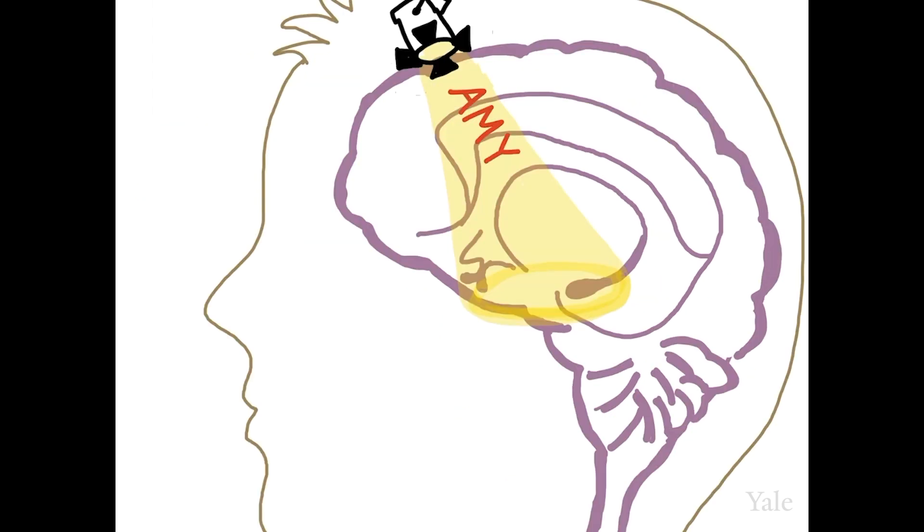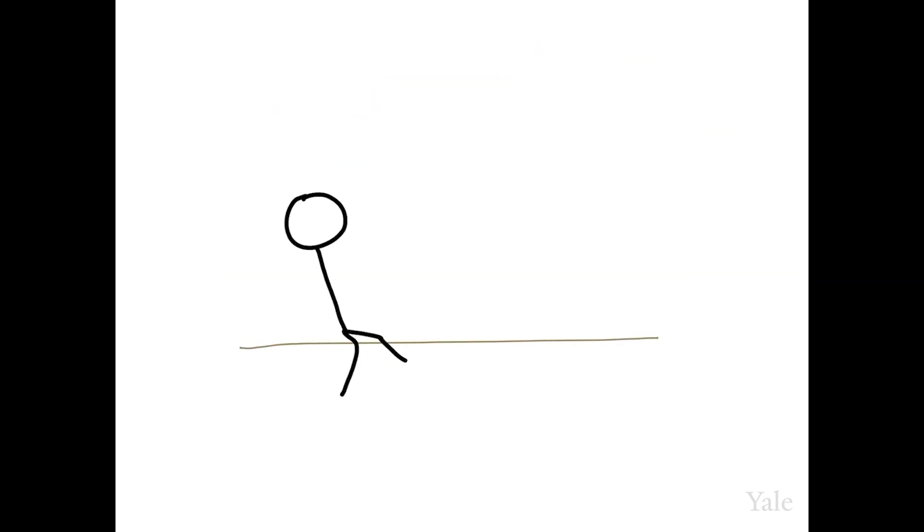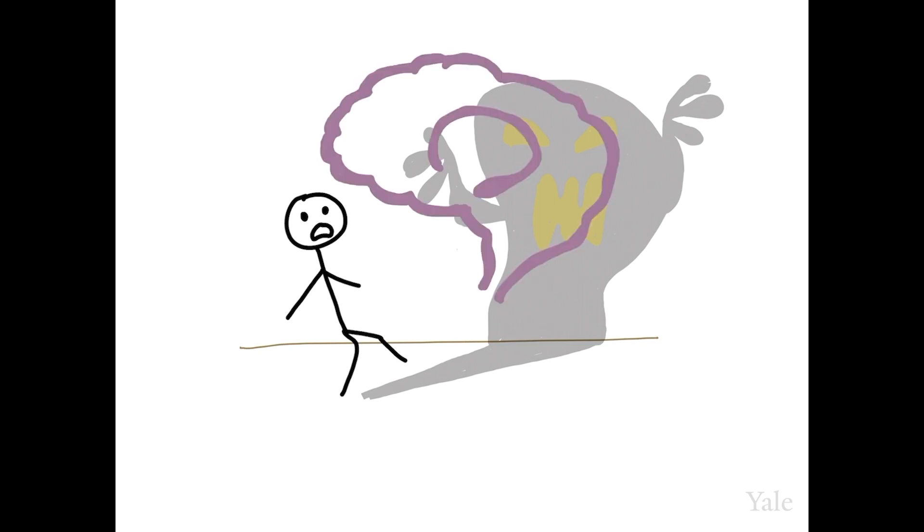When it comes to stress, the amygdala plays a central role. Though the amygdala is involved in many complex emotional responses, it's particularly important for processing anxiety and fear. The perception of a stressful situation enhances neural activity in the amygdala.